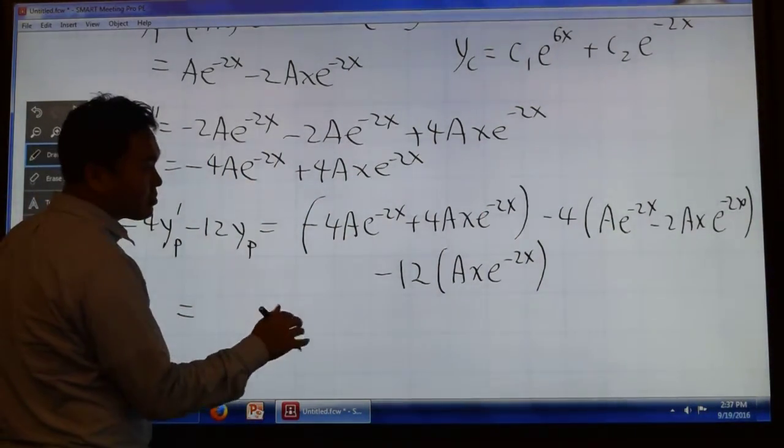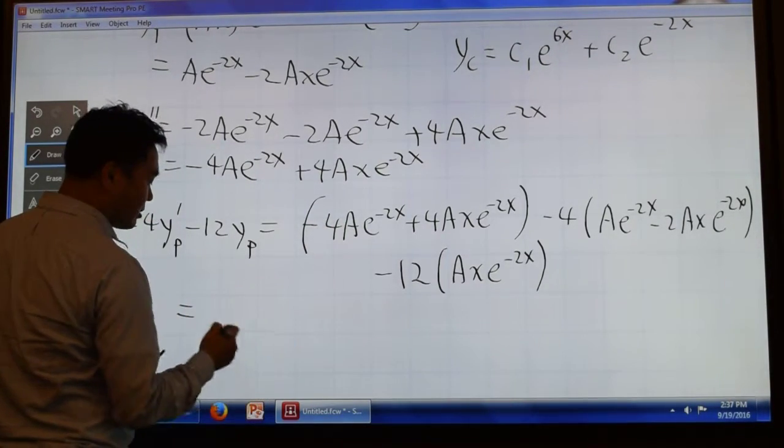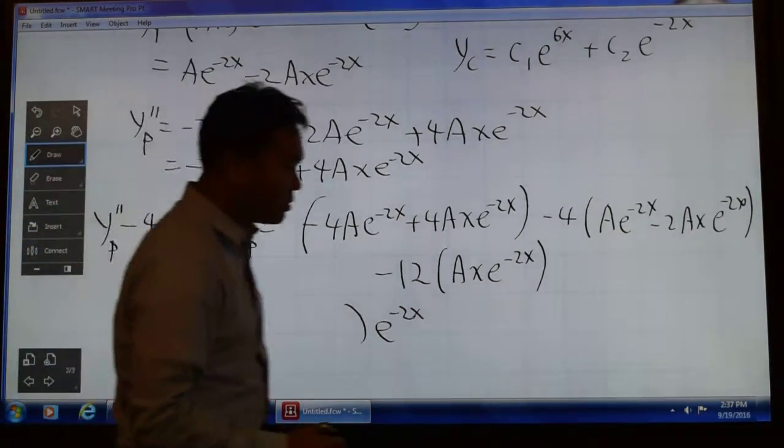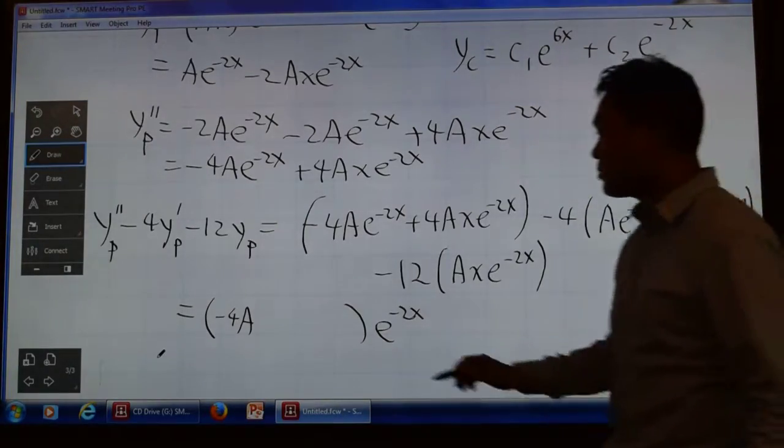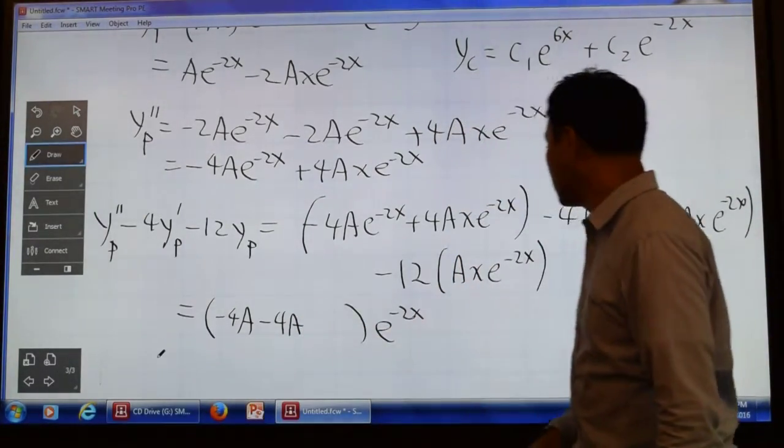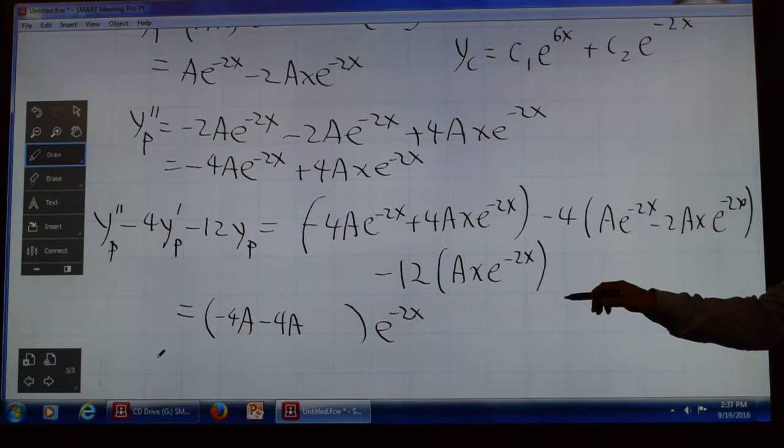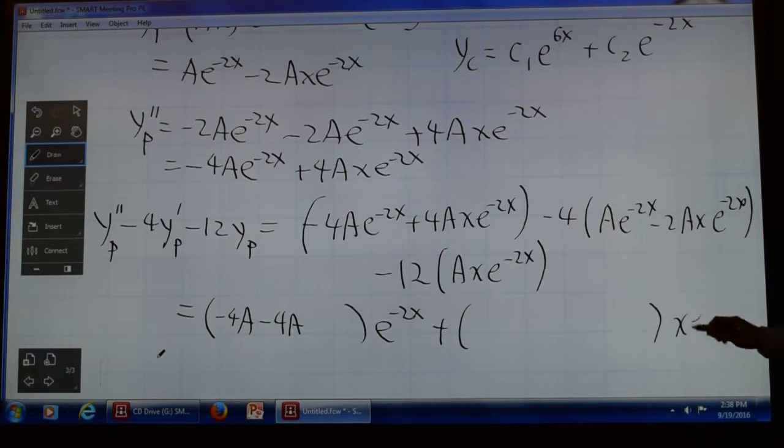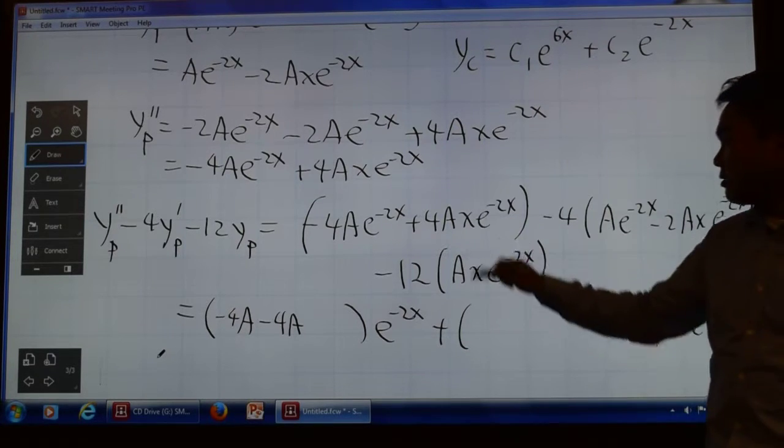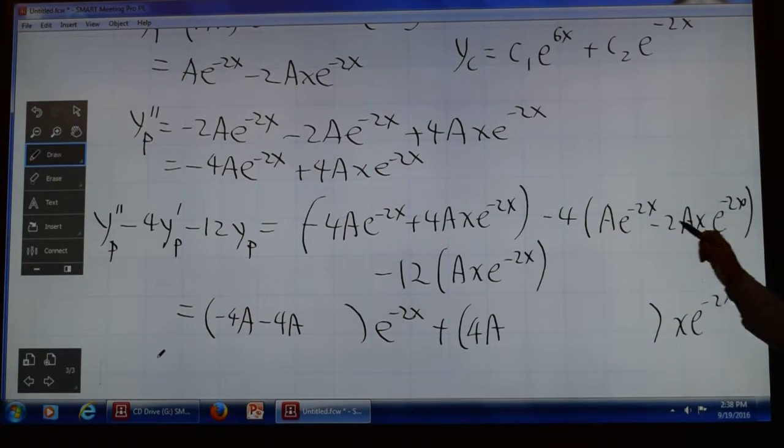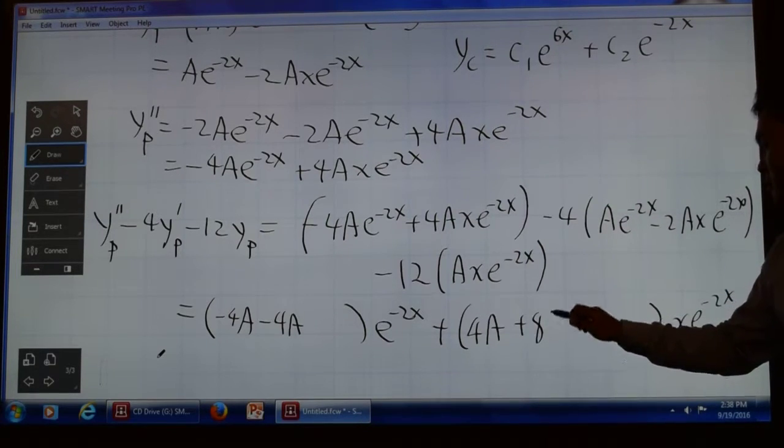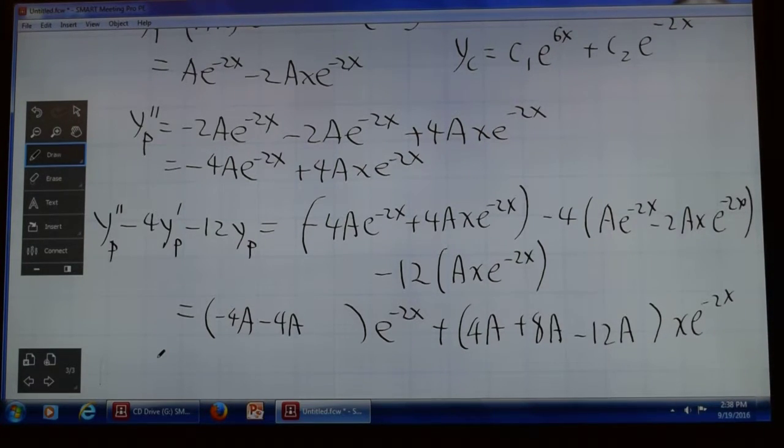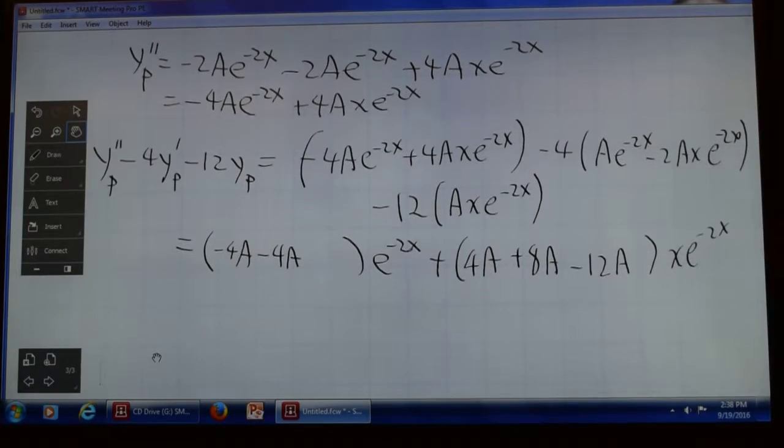This is negative 4A e to the negative 2X plus 4AX e to the negative 2X. Minus 4 times YP prime is 8A times e to the negative 2X minus 2AX e to the negative 2X. And then, finally, minus 12 times YP is AX e to the negative 2X. Let's organize term by term. We have negative 4A. Let's collect all the e to the negative 2Xs. So, we have negative 4A here. We have another negative 4A here. How about X times e to the negative 2X? For that, we have 4A from the first one. We have plus 8A in the second one. And the third one, we have negative 12A.